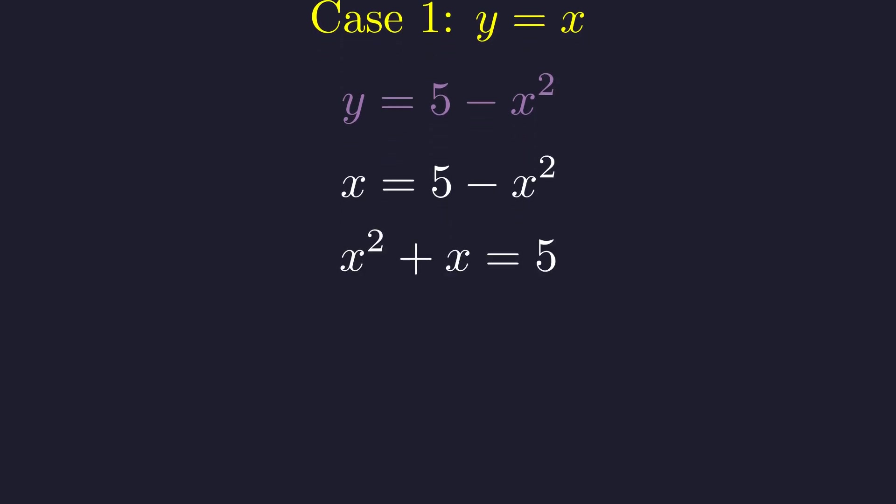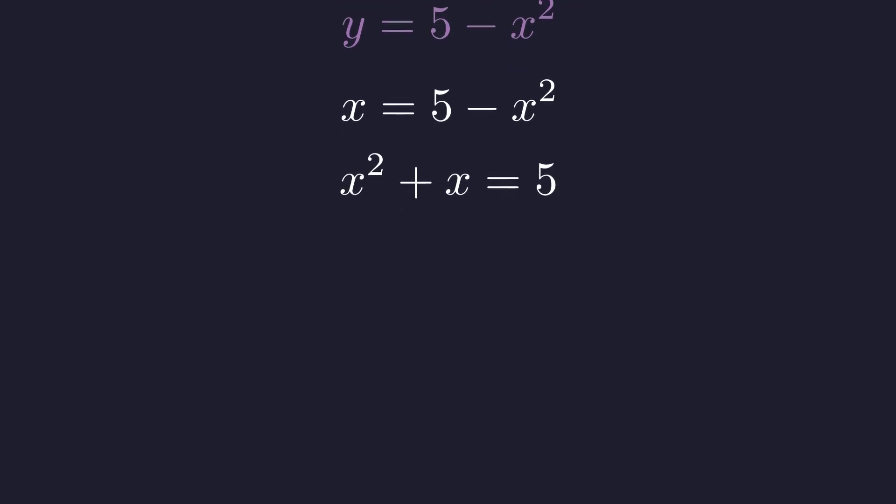First, we add x squared to both sides. Then we subtract 5 from both sides. This doesn't factor nicely, so we'll use the quadratic formula to find the exact solutions. Remember, we'll need to check which solutions are valid for the original equation.